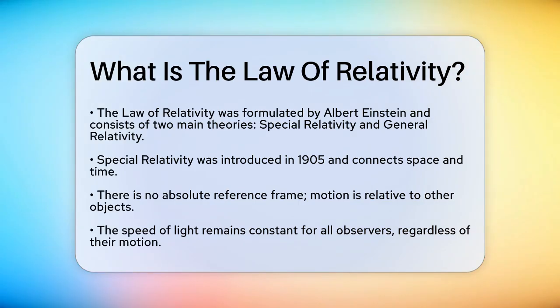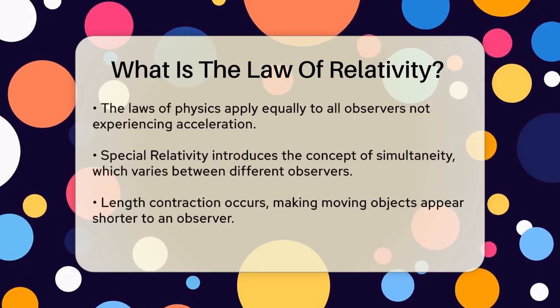There is no absolute reference frame. This means that you can only measure velocity or motion relative to other objects. The speed of light is always constant, no matter who measures it or how fast the person measuring it is moving.